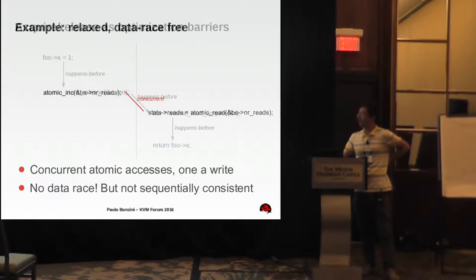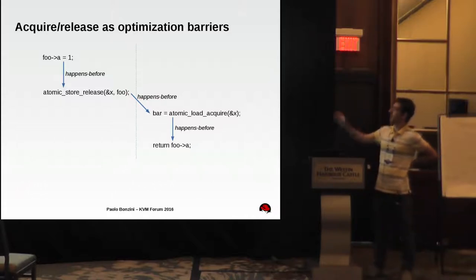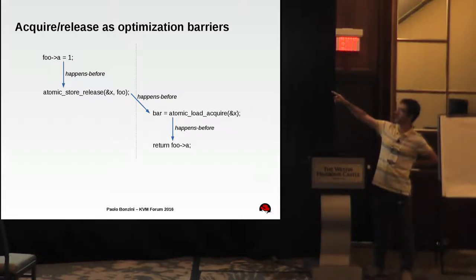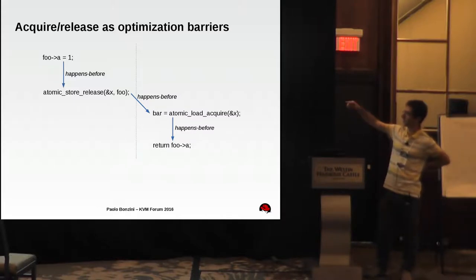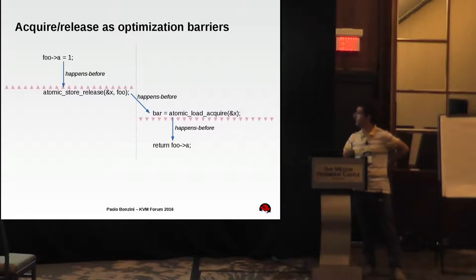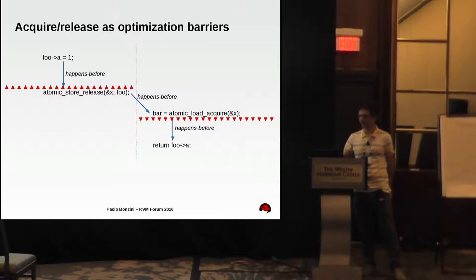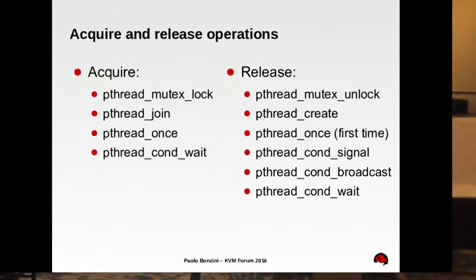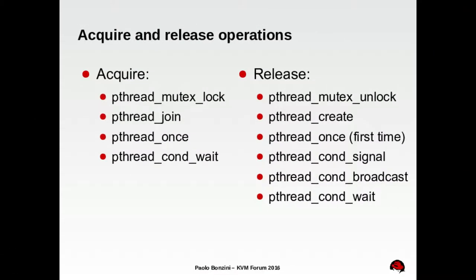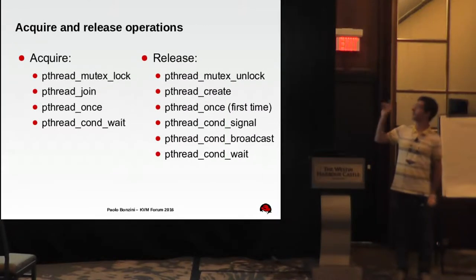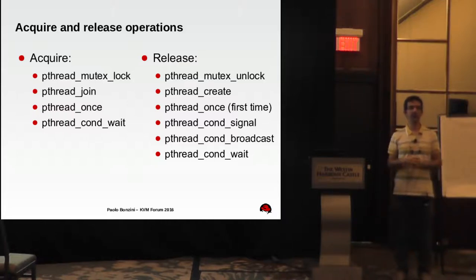An important point about acquire-release is that they also act as optimization barriers. In the first correct example, the compiler cannot move the assignment of foo->a after the store-release, and similarly cannot move accesses across the load-acquire. You have optimization barriers on both sides. And this is the other important characteristic of acquire and release semantics. Anything can be thought of as an acquire and release operation — for example, lock and unlock of a mutex also have the same optimization barrier semantics as load-acquire and store-release.